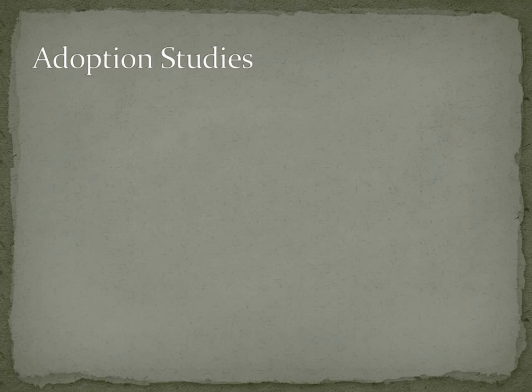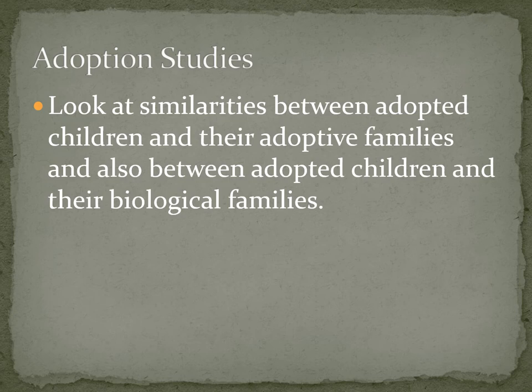In adoption studies, researchers look at the similarities between adopted children and their adoptive families, as well as between adopted children and their biological families. If the adopted child is more similar in a particular trait to their biological parents and siblings, we see the influence of heredity. When they resemble their adoptive families more, we see the influence of environment. In some studies, such as the Colorado Adoption Project, they compare the resemblance between adoptive siblings with that between genetically related siblings, allowing us to see the contributions of both heredity and environment.